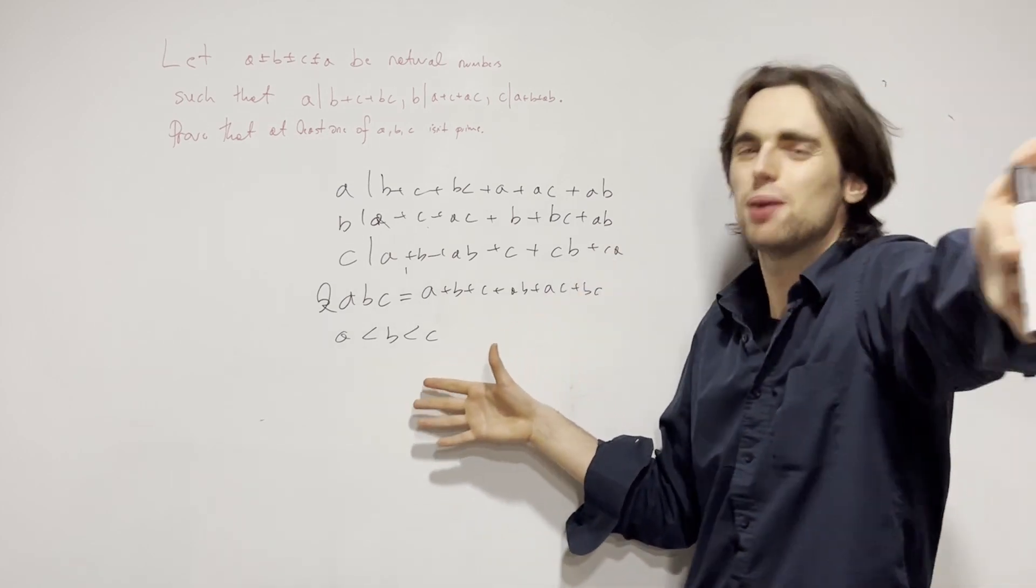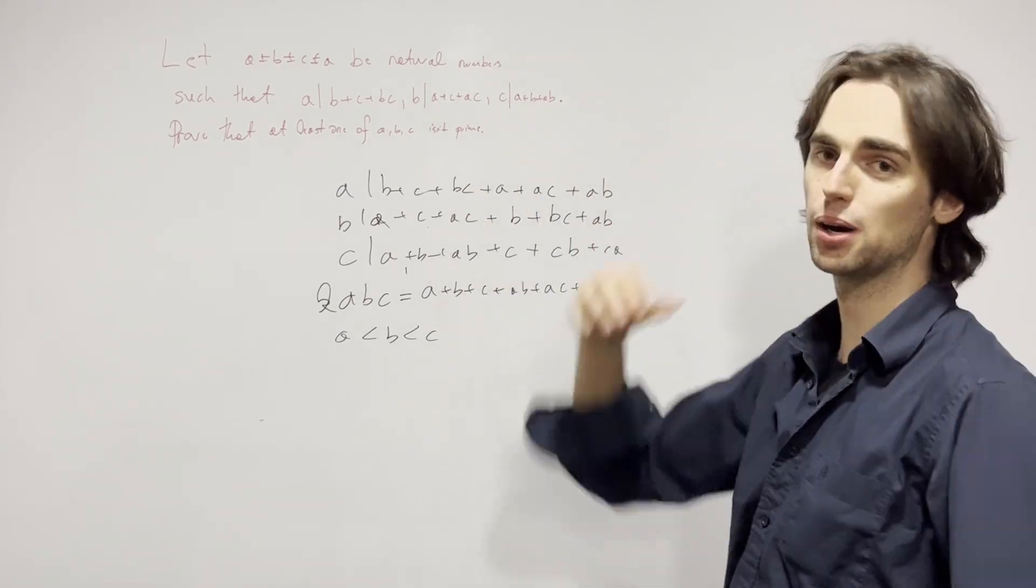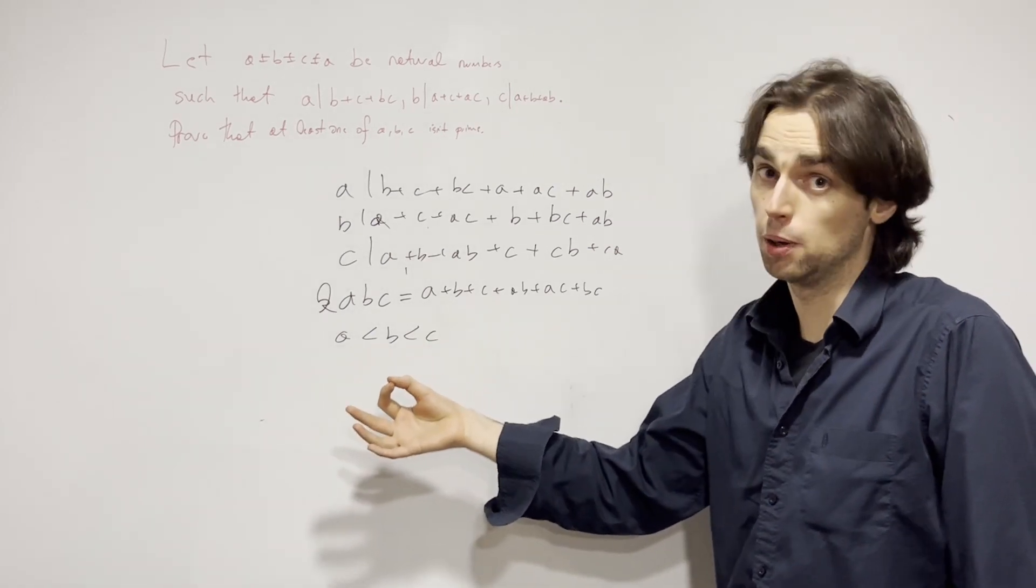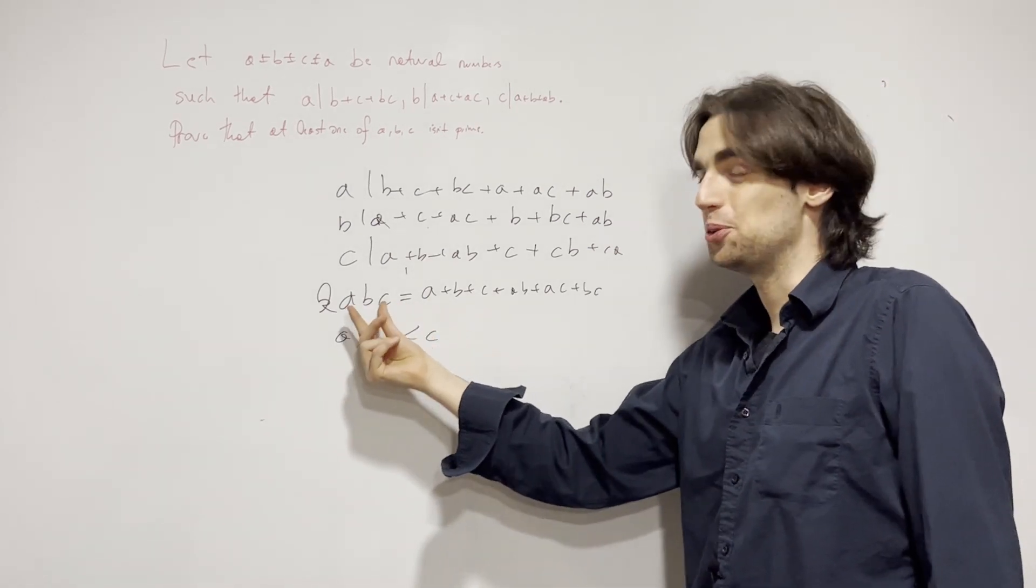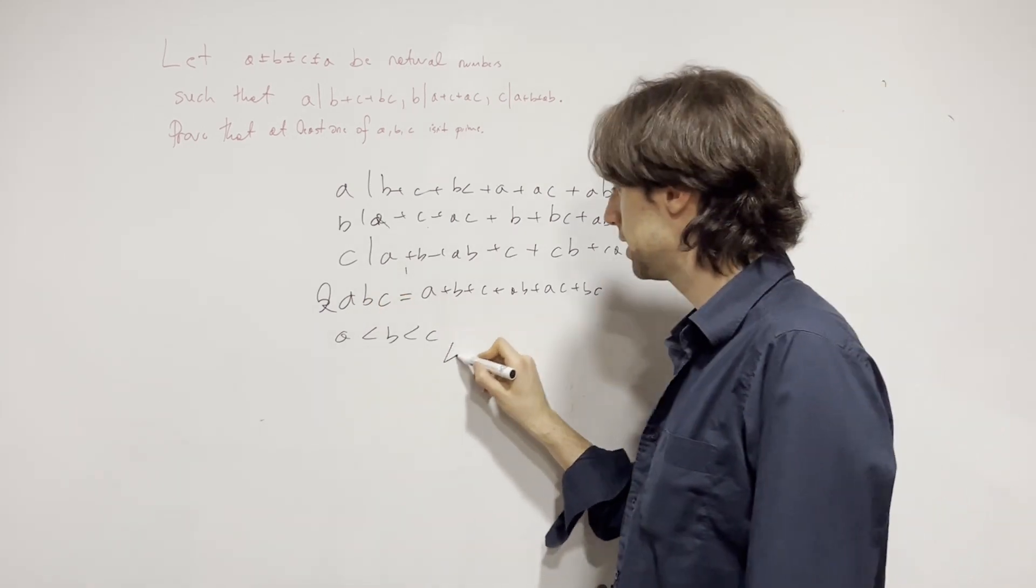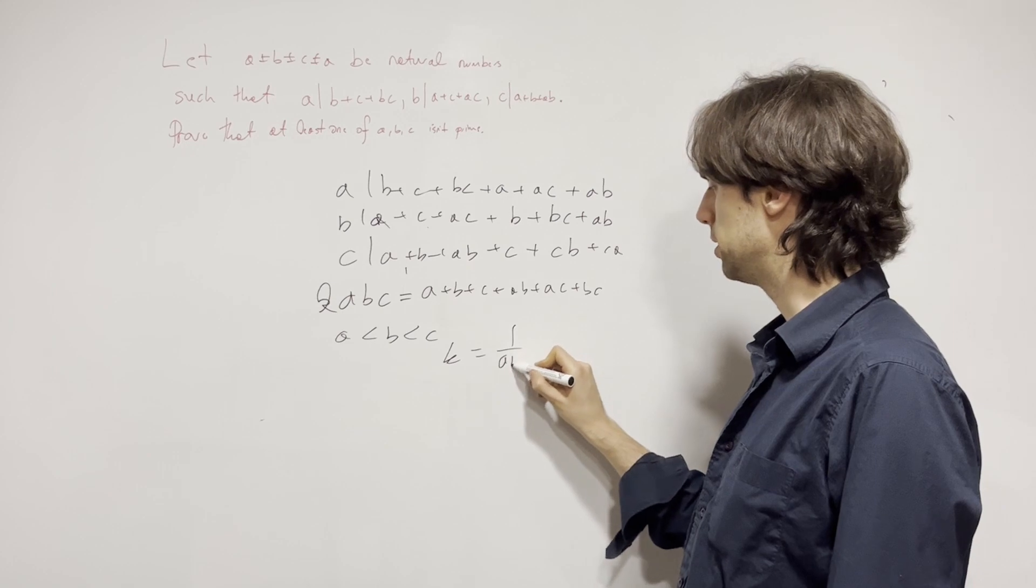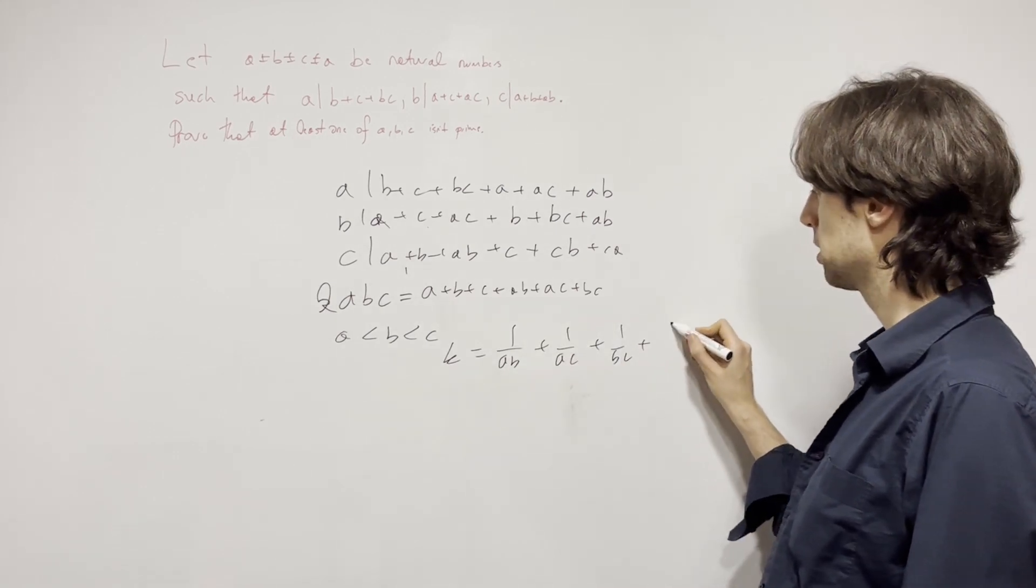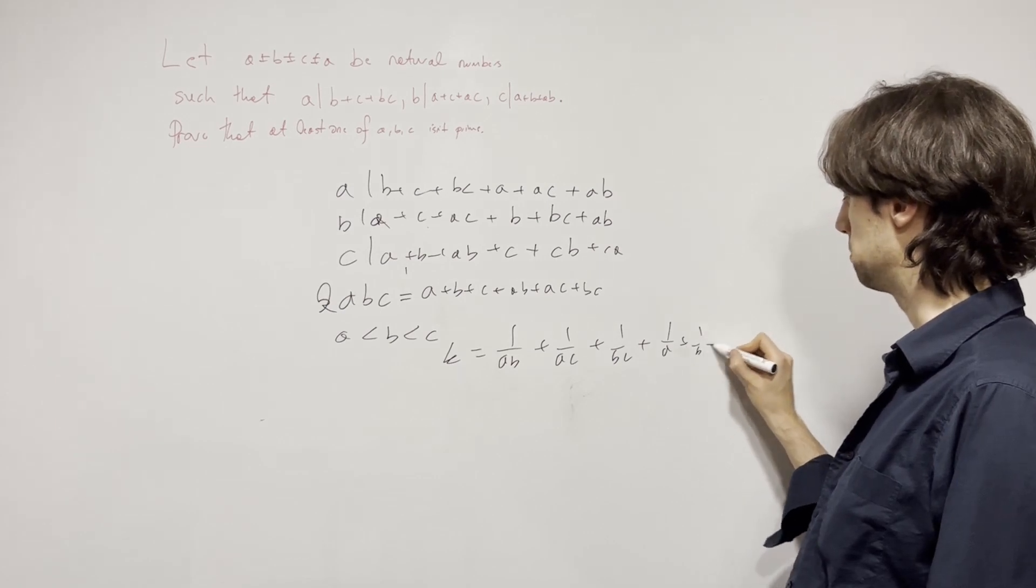One, I invite you here, pause for 10, 20 minutes, finish up the problem. And there's many ways to finish it up the way I would like to finish it up. I hope you paused, is to divide everything by ABC. And then I'll have K is equal to 1 over AB plus 1 over AC plus 1 over BC plus 1 over A plus 1 over B plus 1 over C.